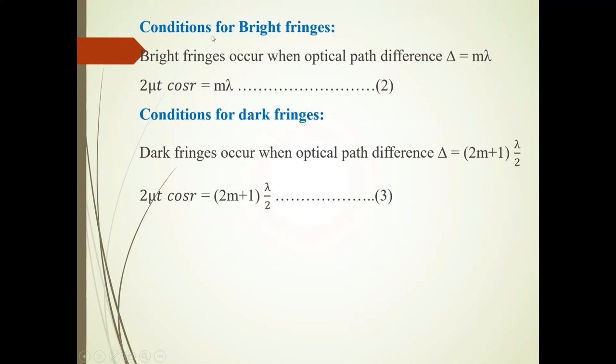Condition for bright fringes: Bright fringes occur when the optical path difference equals mλ. So 2μT cos R equals mλ. This is the condition for brightness.